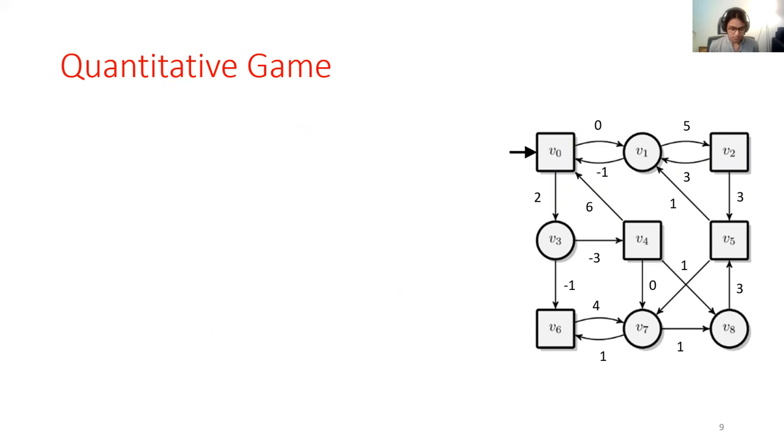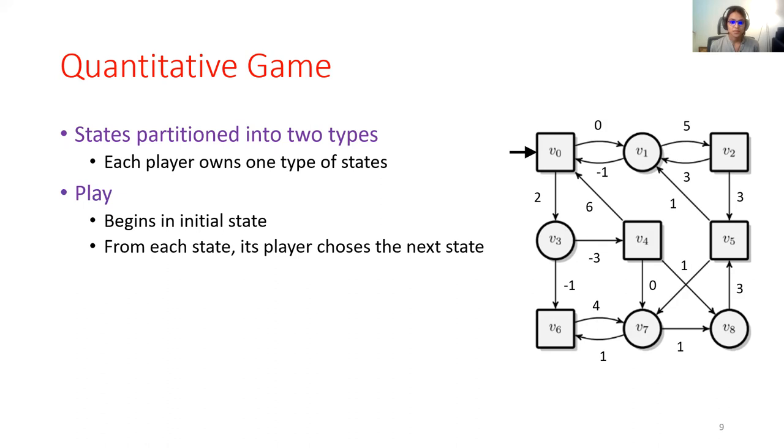So, let's begin with what quantitative games are. Quantitative game is really a turn-based game played on a weighted graph. There are two players and two types of states. The states could be circle states or square states, and each player owns exactly one type of state. A play in a game is simply an infinite path in the game, which begins in the initial state, V0 in this case, indicated by the tiny arrow.